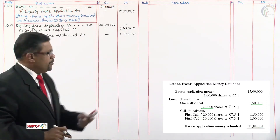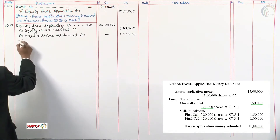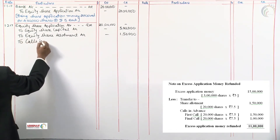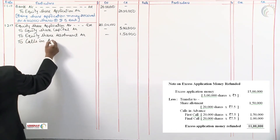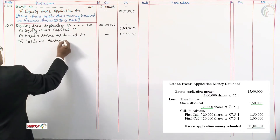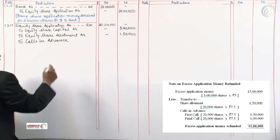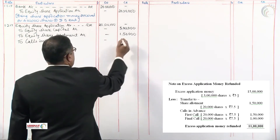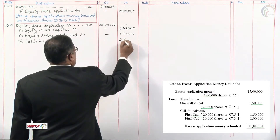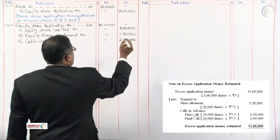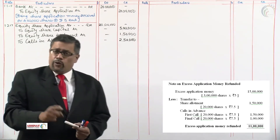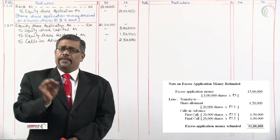Credit calls in advance for the total calls: 1 lakh 50 of the first call and 1 lakh of the second and final call — total 2 lakh 50,000 as per the working note. The money to be refunded is 11 lakhs.